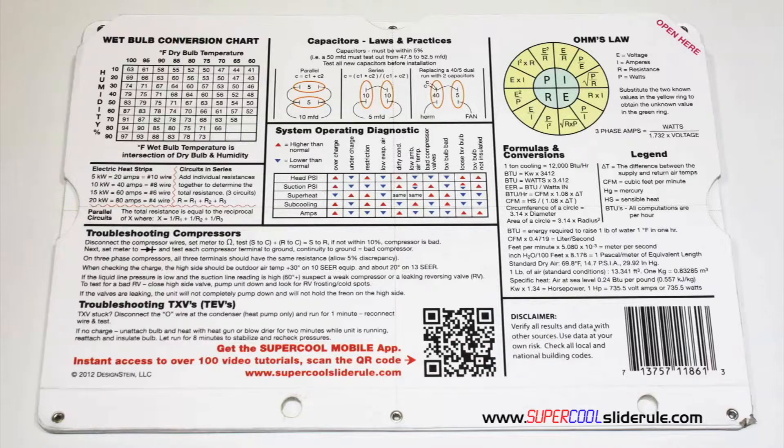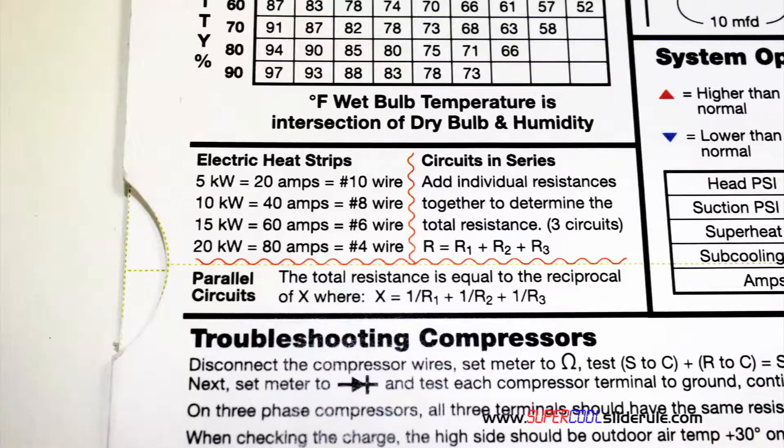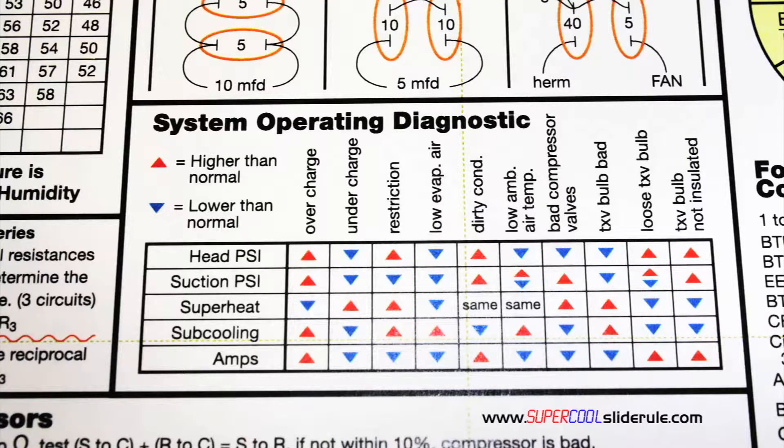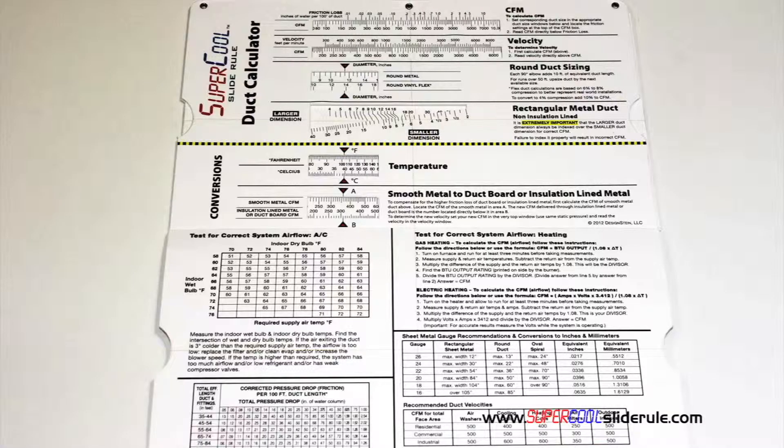It has capacitor rules and practices, a wet bulb conversion chart, how to perform computations on series or parallel circuits, an electric heat strip guide, a complete system troubleshooting diagnostic chart, and how to troubleshoot compressors and TXV. Inside is packed with even more information.